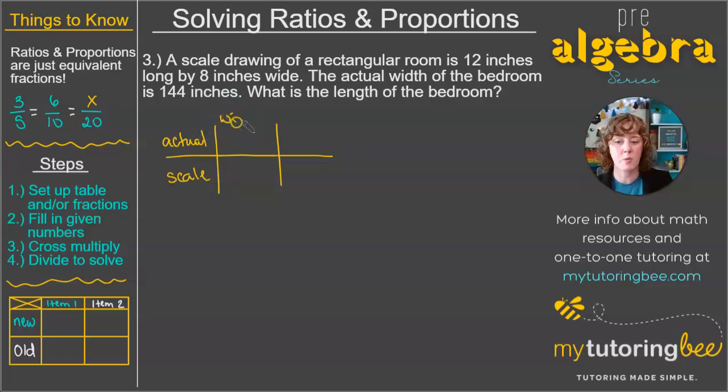So we are talking about width and length for our items across the top here. So again, this is just a tool to help us set up those proportions when we're not sure how to set up the numbers in those two fractions. All right, so for the scale drawing, we've got 12 inches long. So that's going to go here and then 8 inches wide. So that's going to go here. And then for the actual width of the bedroom, we have 144 and then we want to find the length. So that's where our variable is going to go.